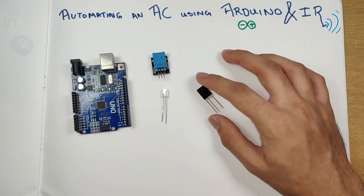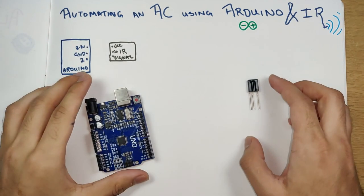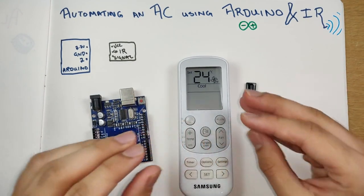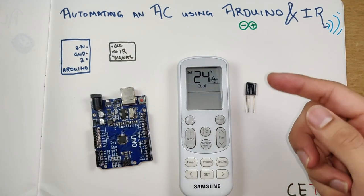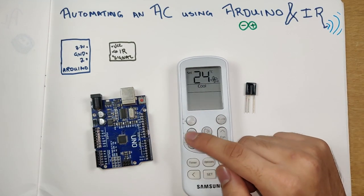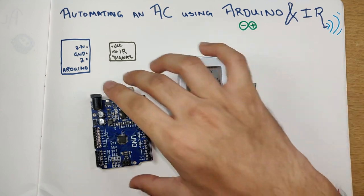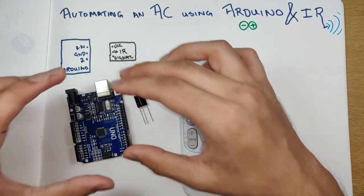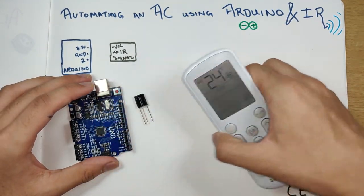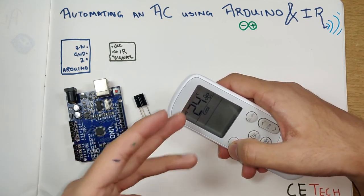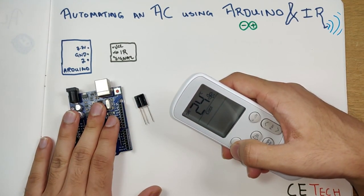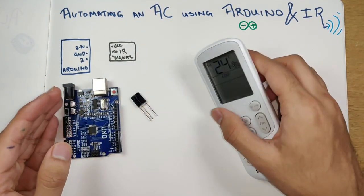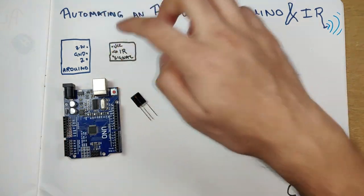For the first half of the project, we need to record the IR signal codes that our remote sends when pressing power on/off or temperature up/down buttons. To do that, we'll rig up a small circuit connecting the IR receiver to an Arduino, run some code, and record what code the remote sends. We'll then mimic that same code in the second stage.